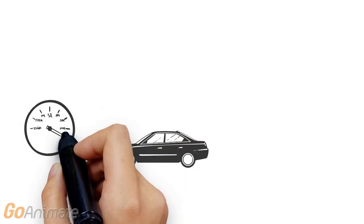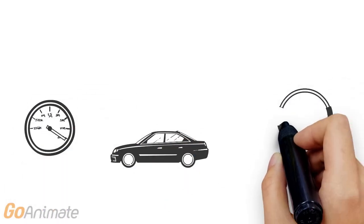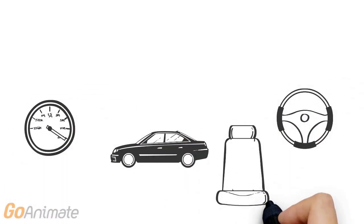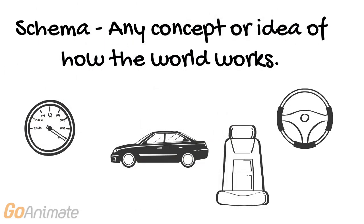A schema is any concept or idea of how the world works. For example, your schema for a car may include a steering wheel, which is what turns the car, a speedometer, which tells you how fast you're going, and maybe a car seat. All these things are incorporated into your schema of a car.